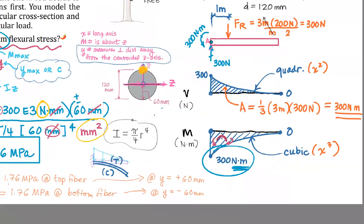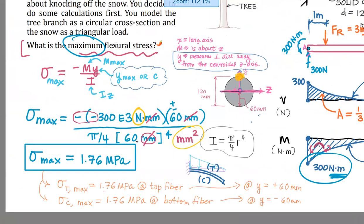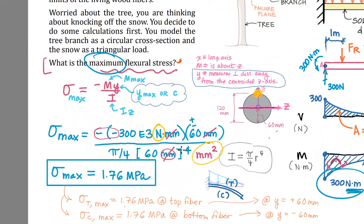So we were able to calculate from the comfort of our house that that tree branch is experiencing roughly 1.76 megapascals. And you could compare that to known values of living tree fibers for a particular species rupture and determine whether it's worth your time to go outside and knock the snow off the branch. So I hope you enjoyed this video. Thank you for tuning in.